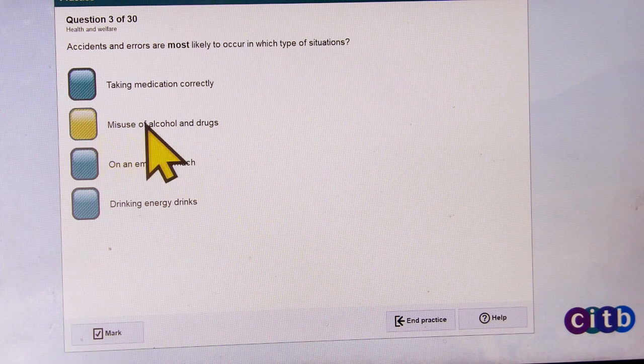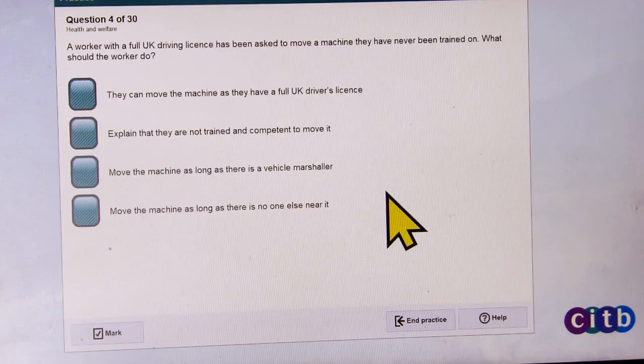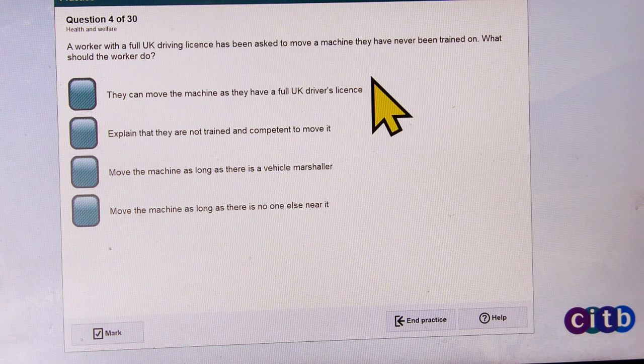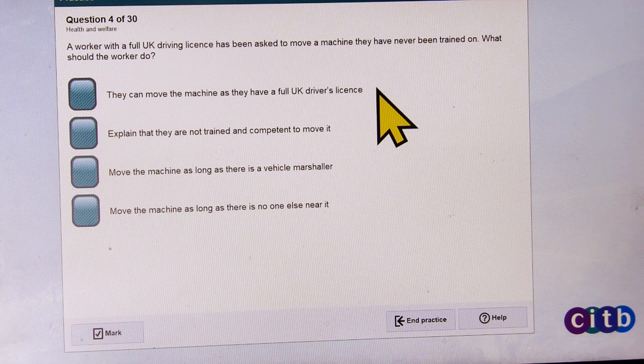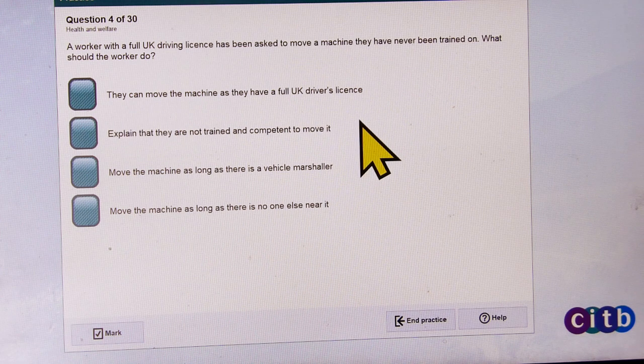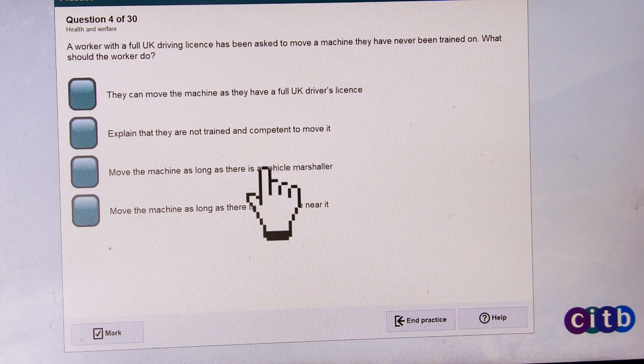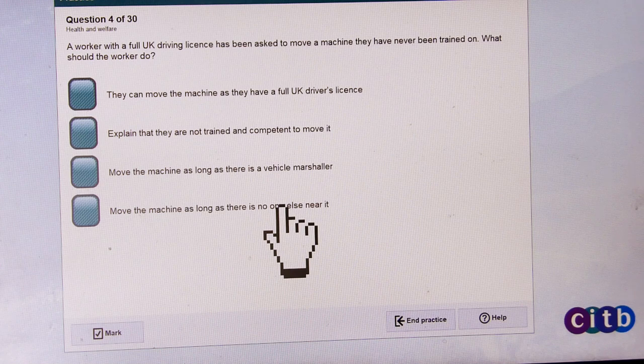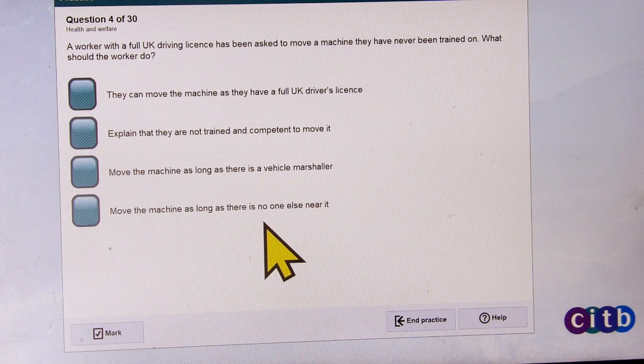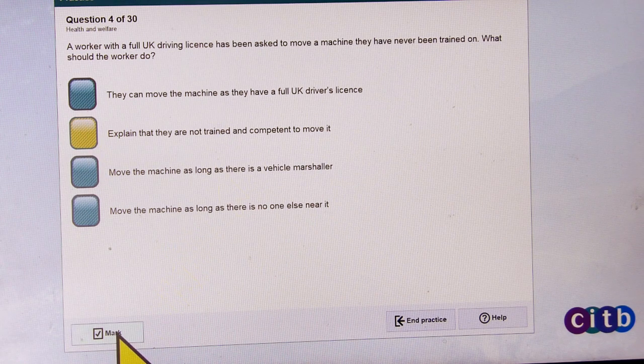Taking medication correctly, misuse of alcohol and drugs, on an empty stomach, drinking energy drinks. A worker with a full UK driving license has been asked to move a machine they have never been trained on. What should the worker do? Explain that they are not trained and competent to move it.